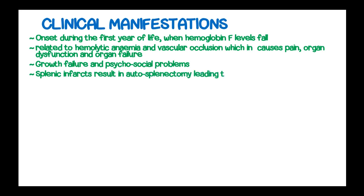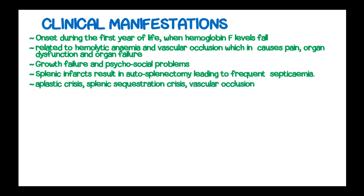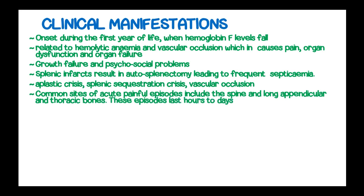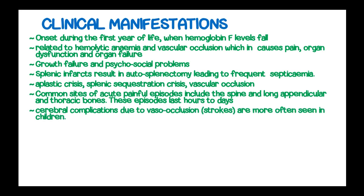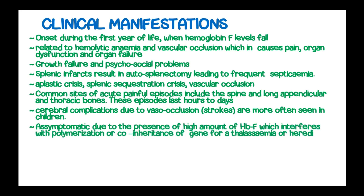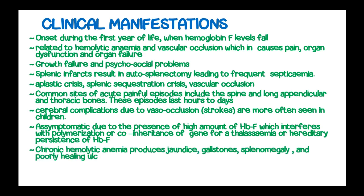Splenic infarction results in autosplenectomy, leading to frequent septicemia. Aplastic crises, splenic sequestration crises, and vascular occlusion crises are most common in patients with sickle cell disease. Patients may also have chronic hemolytic anemia producing jaundice, gallstones, splenomegaly, and poorly healing ulcers over the lower leg. Priapism is present in male children.